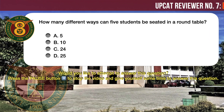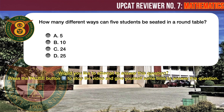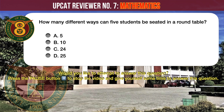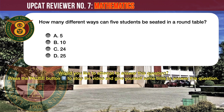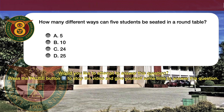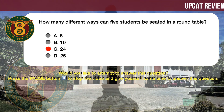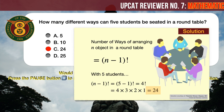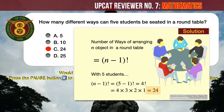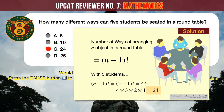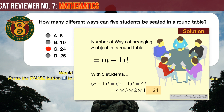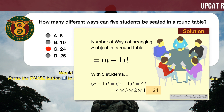Question number 8. How many different ways can 5 students be seated at a round table? A: 5. B: 10. C: 24. D: 25. The correct answer is C, 24. The number of ways of arranging n objects in a round table is given by the formula (n minus 1) factorial. With 5 students, the number of arrangements is (5 minus 1) factorial equals 4 factorial equals 4 times 3 times 2 times 1 equals 24.